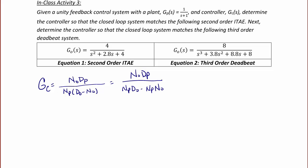Next, determine the controller so that the closed-loop system matches the following third-order deadbeat system. So first, let's identify the numerator and denominator of the plant. The numerator of the plant is equal to 1. The denominator of the plant is equal to s plus 1.